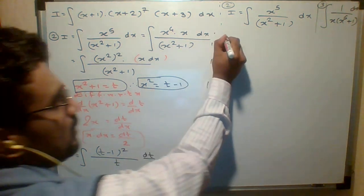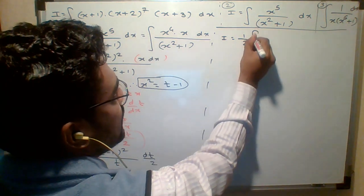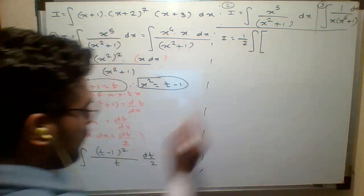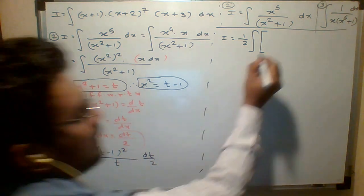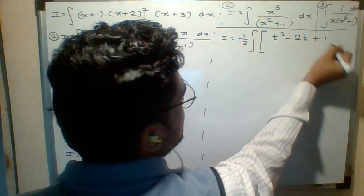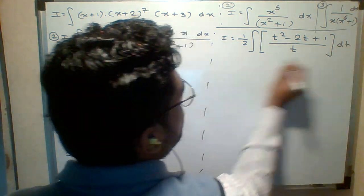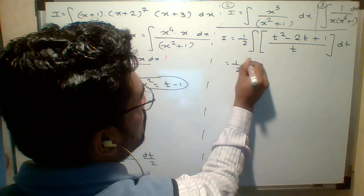Now I will take 1 upon 2 out of integration. Integration is as it is. Now here I will apply a minus b the whole square: a squared minus 2ab plus b squared. This is the formula. And upon t.